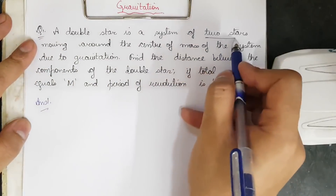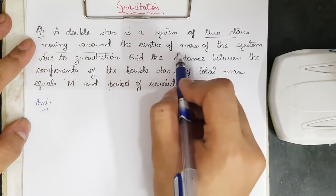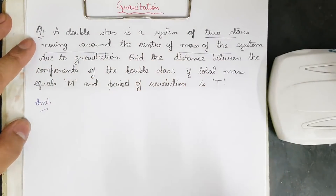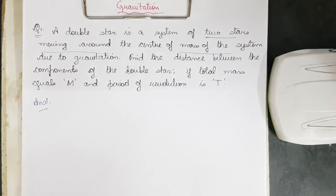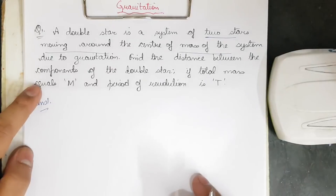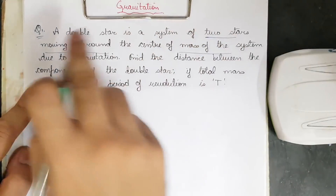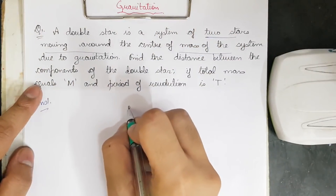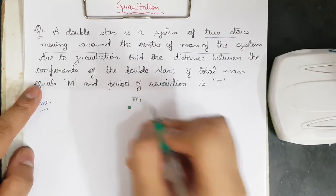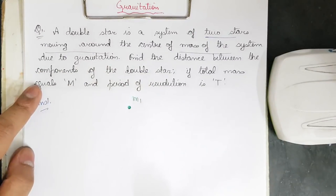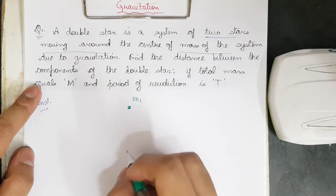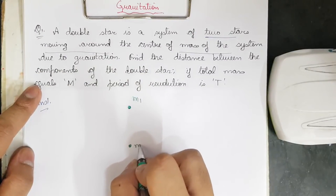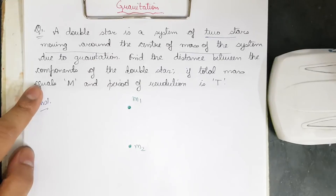What is a double star? A double star is a system of two stars moving around the center of mass of the system. Whenever a question has been given in physics, always try to draw the diagram for it. We have two stars moving around the center of mass. The first one has mass m1 and the second one has mass m2.